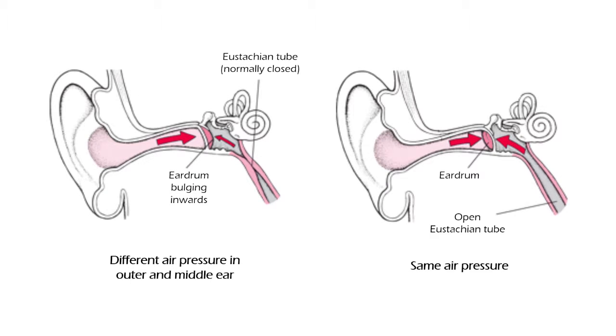These pressures are equalized when the Eustachian tube opens, which is achieved by chewing gum, yawning, or swallowing, although it is also possible to learn to do this movement voluntarily, and that's what we commonly know as popping our ear.